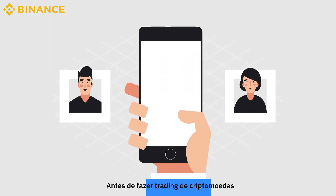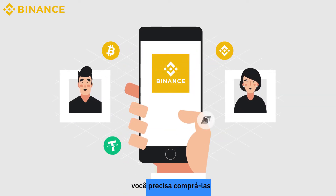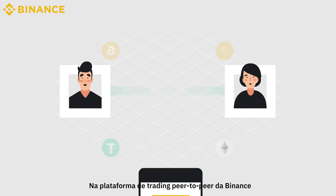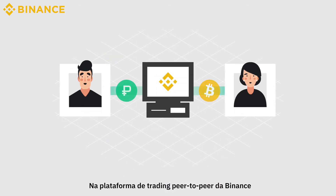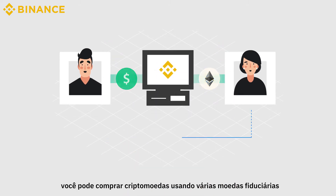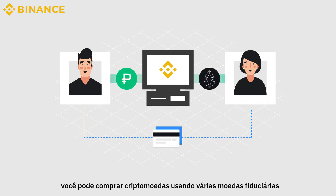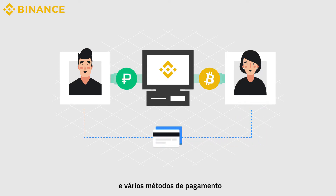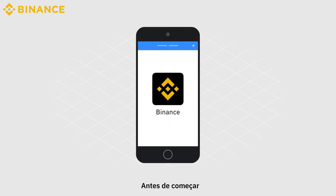Before trading cryptocurrencies, you need to buy cryptocurrencies first. On the Binance Peer-to-Peer Trading Platform, you can buy cryptocurrencies using multiple fiat currencies in various payment methods. It's super simple.